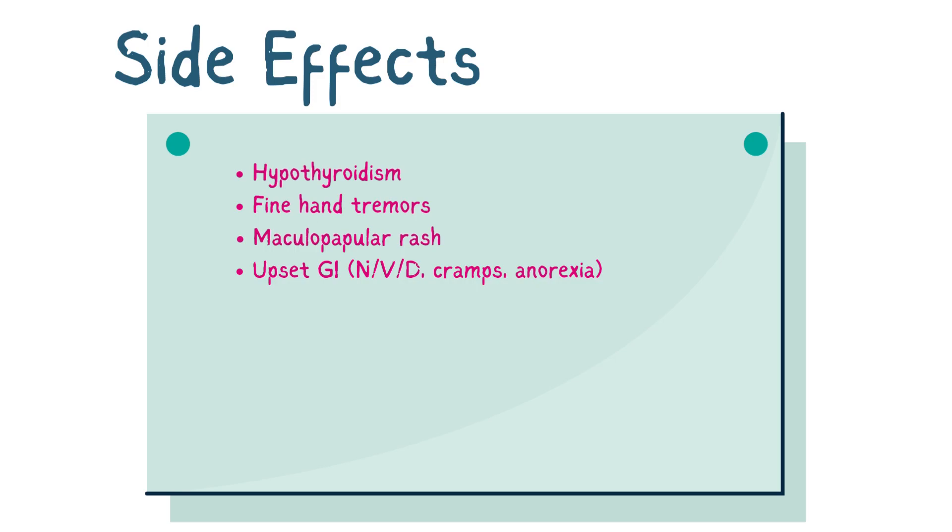So nausea, vomiting, diarrhea, cramps, anorexia, and then polyuria, which is excessive urination, and polydipsia, which is excessive thirst. Diabetes insipidus, T-wave inversions, and leukocytosis.